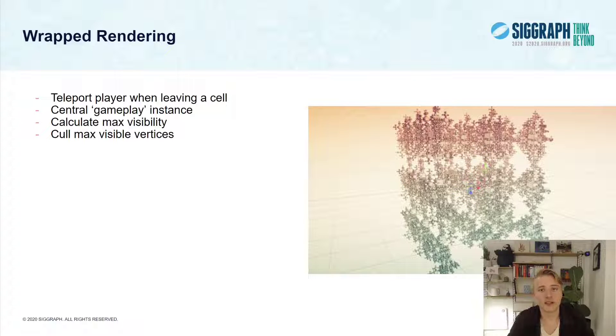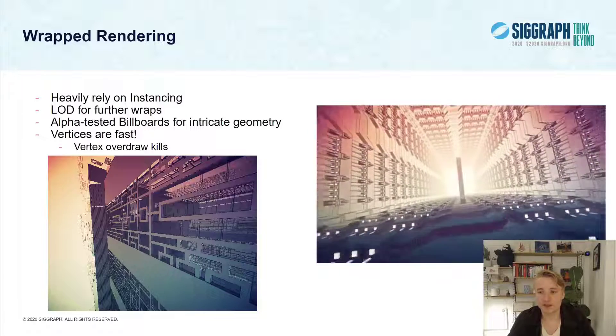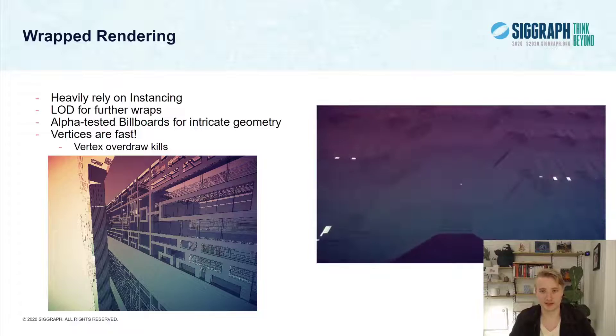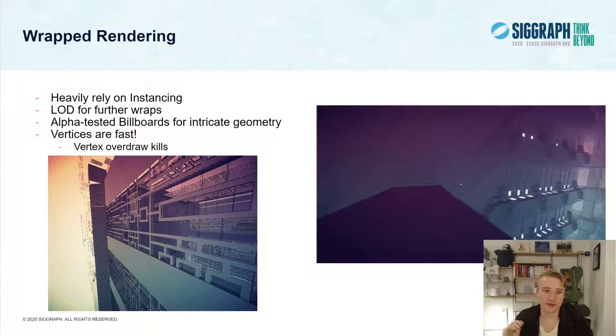This allows us to only keep all the gameplay relevant objects just in the central instance, and all the other instances around us are simply purely geometry. We also now know beforehand what the maximum visibility of these objects are, so we can cull away any objects or even on a vertex level, things that will never be visible from the central instance, knowing our maximum render distance. Another reason this is faster than you think is that all of these geometries in the wrapped instances are the same meshes, which means you can draw them with GPU instancing, and you don't even end up with that many draw calls.